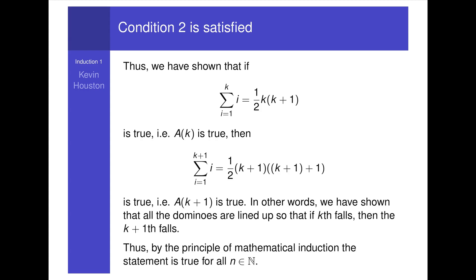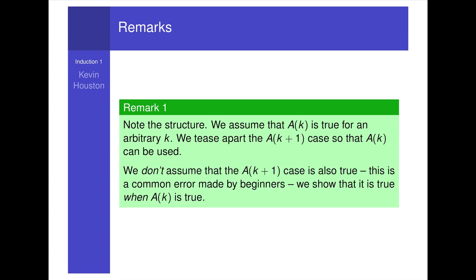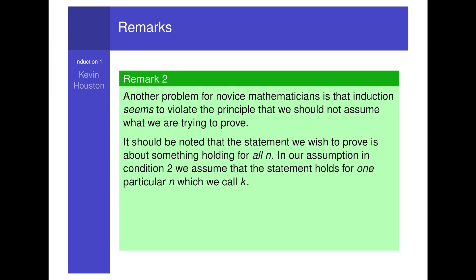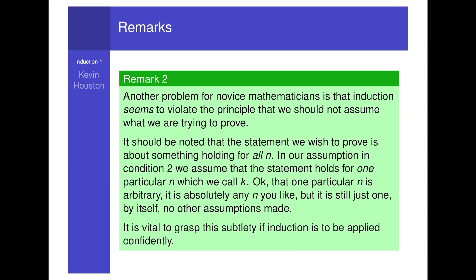Some remarks. Remark one: note the structure — we assume a_k is true for an arbitrary k, and tease apart the a_{k+1} case so that a_k can be used. We do not assume a_{k+1} is also true; this is a common error made by beginners. We show it is true when a_k is true. Remark two: induction may seem to violate the principle that we should not assume what we are trying to prove. The statement we wish to prove is about something holding for all n. In condition two, we assume the statement holds for one particular n called k — it is arbitrary, but still just one single k. It is vital to grasp this subtlety if induction is to be applied confidently.